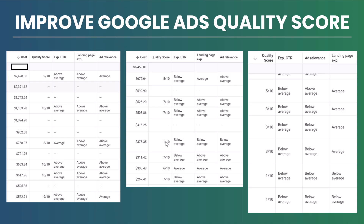Some keywords might show one out of 10 with below average scores, while others show seven out of 10 with one factor below average and the others above. Generally, I try to act on five out of 10 or below. Six out of 10 is still worth optimizing. Scores of one, three, or five are bad; seven and up are good — always look to improve the low ones.